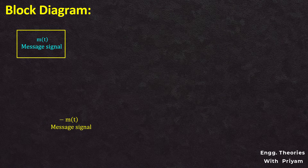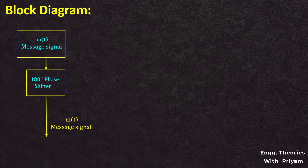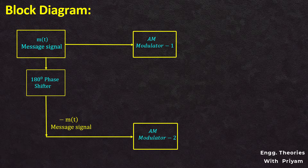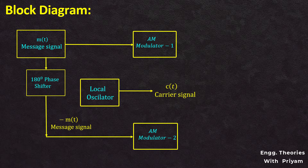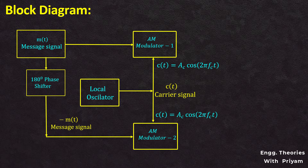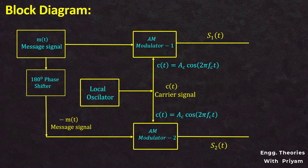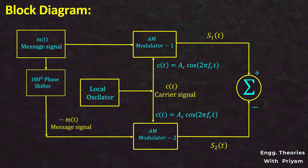Let's see the block diagram for the balanced modulator. The modulating signal m(t) and a 180-degree phase-shifted version, minus m(t), generated by a 180-degree phase shifter, are given as inputs to two AM modulators: Modulator 1 and Modulator 2. The local oscillator generates the carrier signal, which is fed as another input to both AM modulators. The two identical AM modulators generate two amplitude modulated signals s1(t) and s2(t), which are then given as input to a summer. The output of the summer is the DSBSC modulated signal s(t).